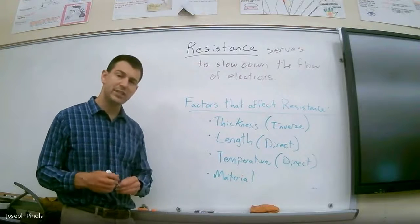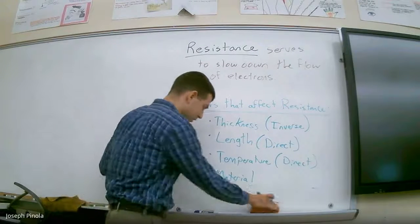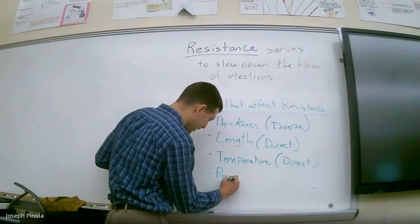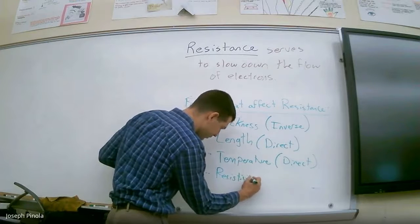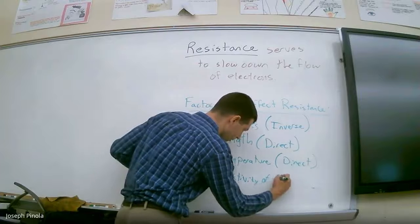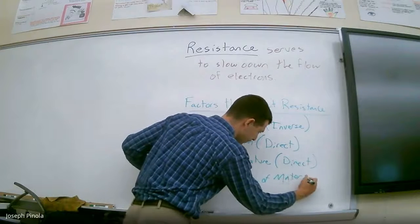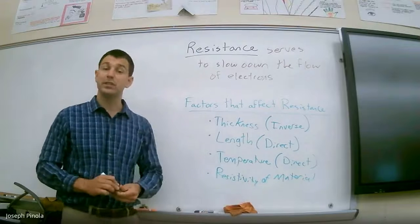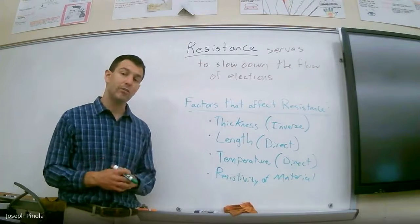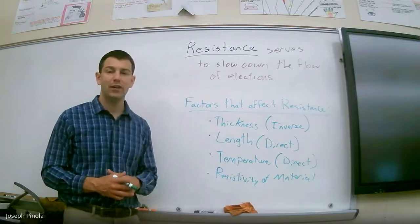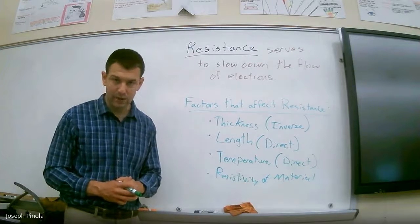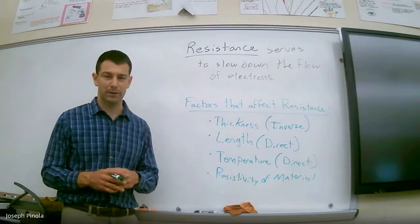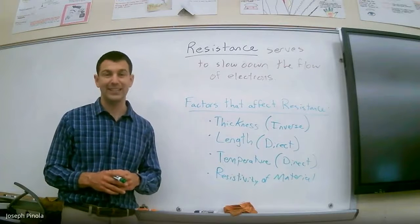There is technically a scientific word for this. Rather than saying material, we are going to say the resistivity of the material. Substances like copper and other metals would have a resistivity value that is very low, and therefore would allow current to flow through very easily.